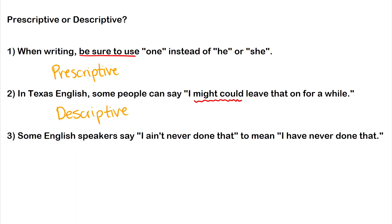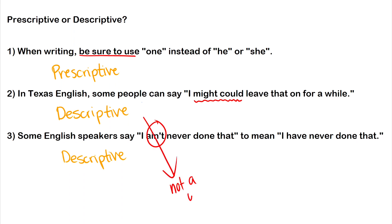In another example, some English speakers say 'I ain't never done that' to mean 'I have never done that.' This is a descriptive statement — we're just observing what English speakers do. Of course, if you wrote that in an essay your teacher would circle it and say 'don't use double negatives,' which is prescriptive. But when we observe people speak, 'I ain't never done that' is a grammatical sentence in their variety, and when you hear it you recognize it as an interesting dialect of English.